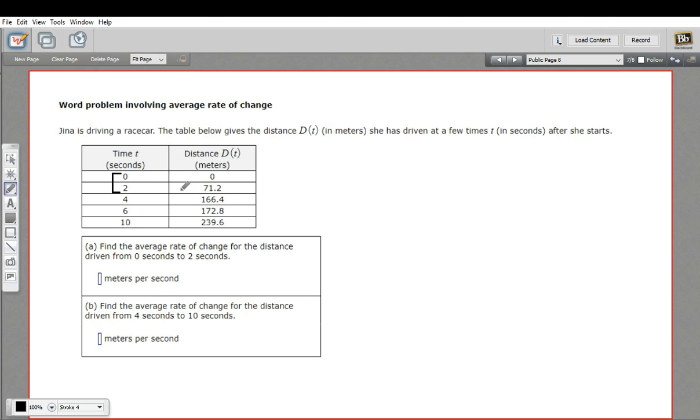So the average rate of change is going to be the difference between the function values: D(t₂) minus D(t₁) over t₂ minus t₁. So we take two t values. In this case, it's two and zero. So on the bottom, we're going to have two minus zero, and on the top, we take the function values at those places.